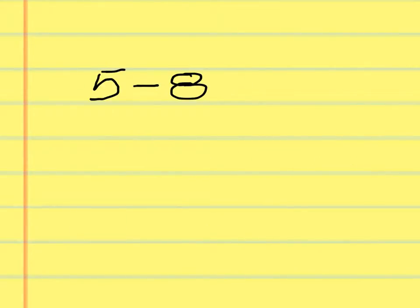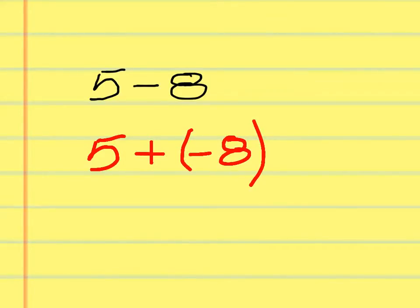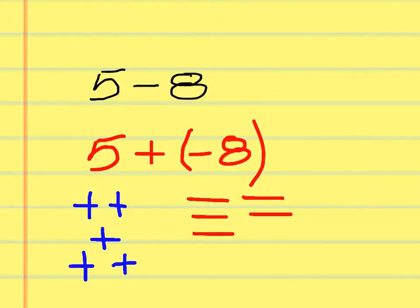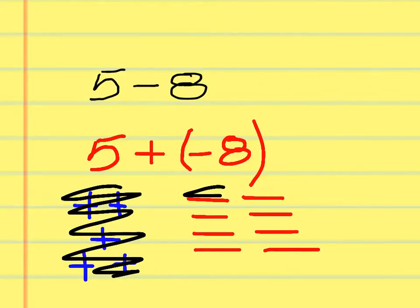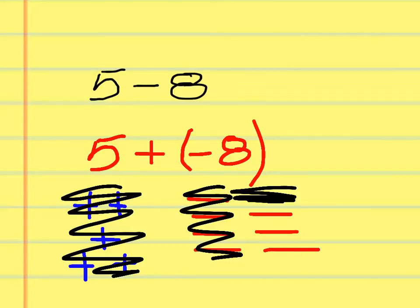5 minus 8. What can I trade out that minus sign for? Plus a negative. So 5 plus a negative 8. That gives me 5 positives and then 8 negatives. I can cancel 5 positives with 5 negatives. What am I left with? Negative 3.